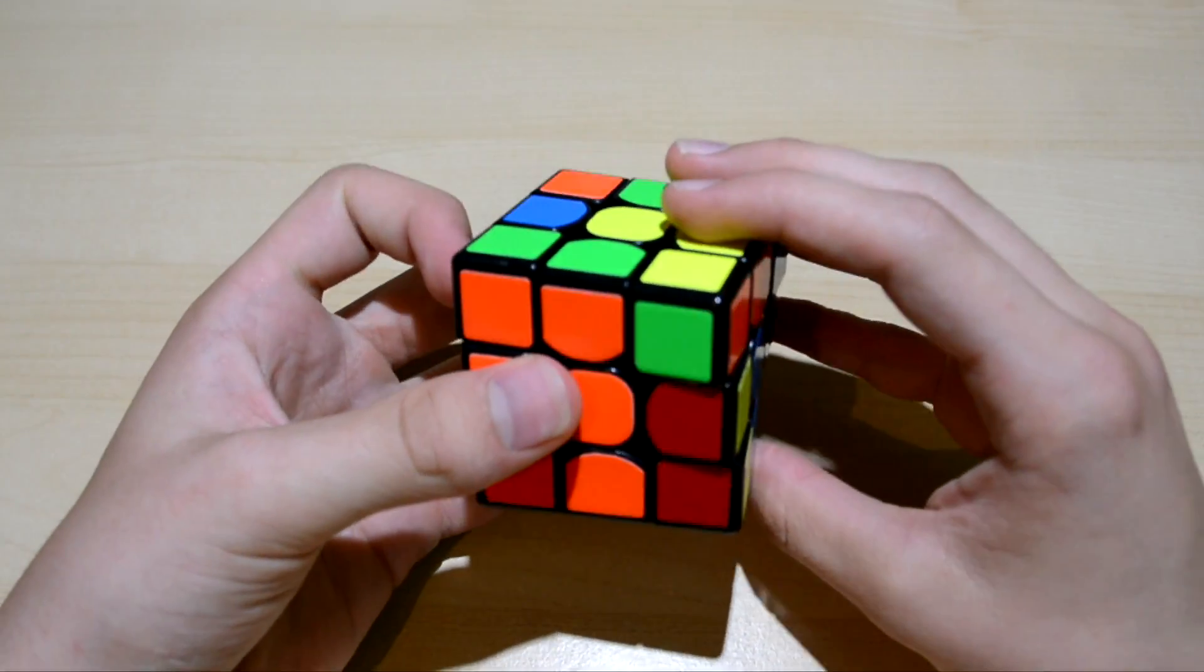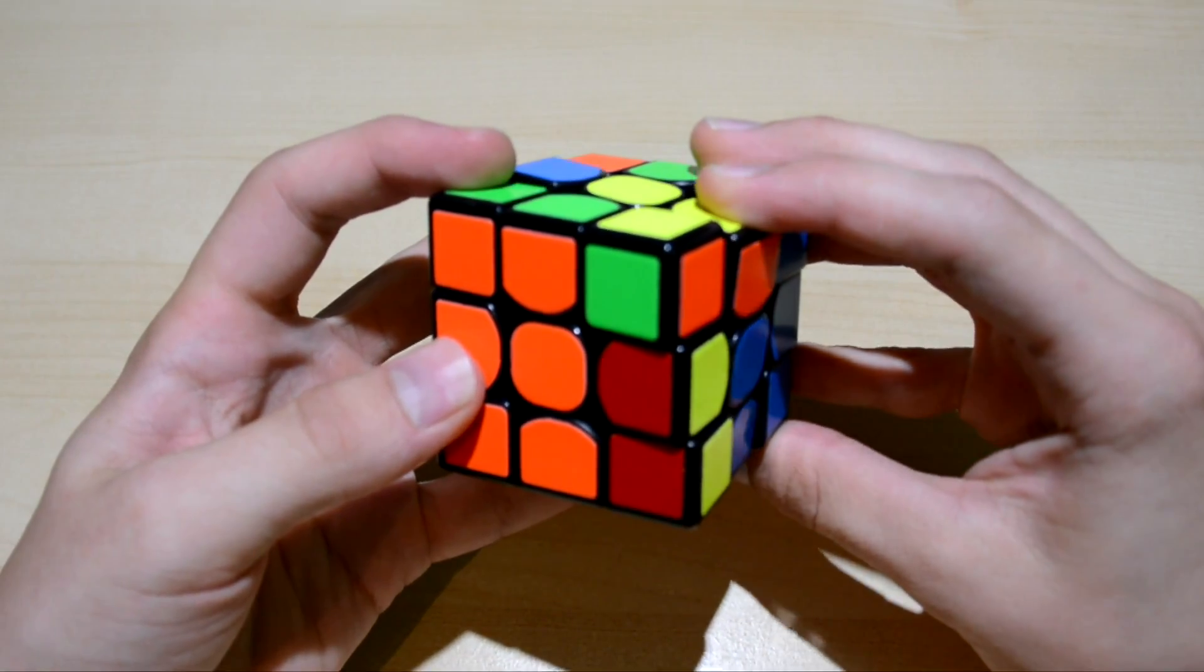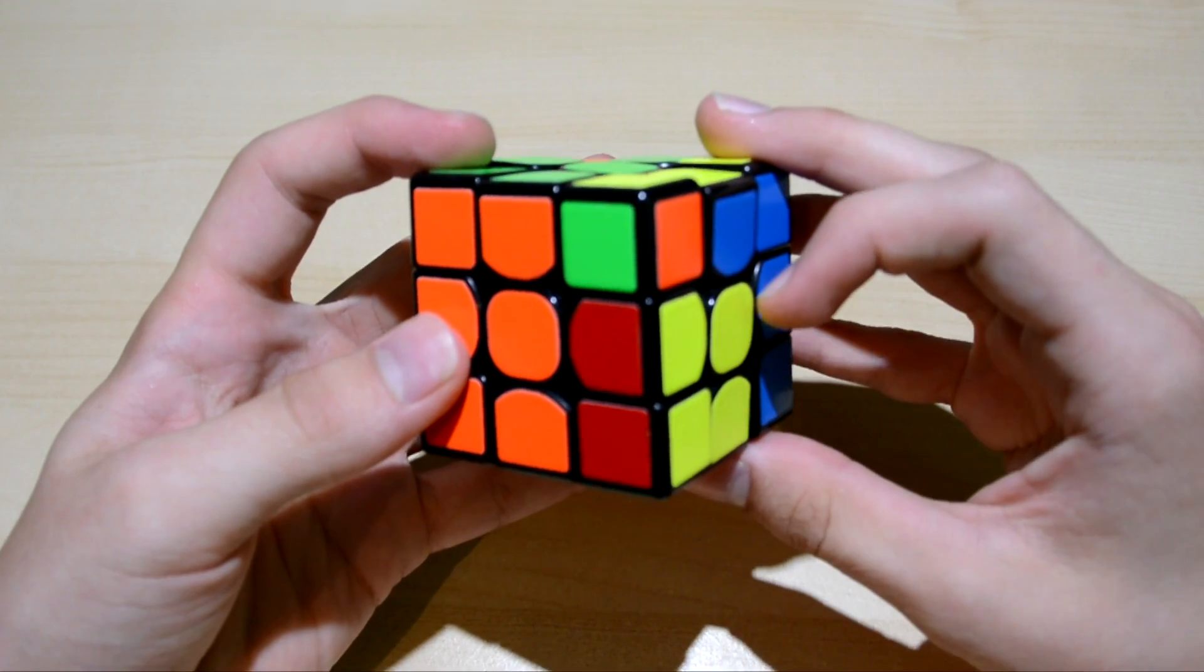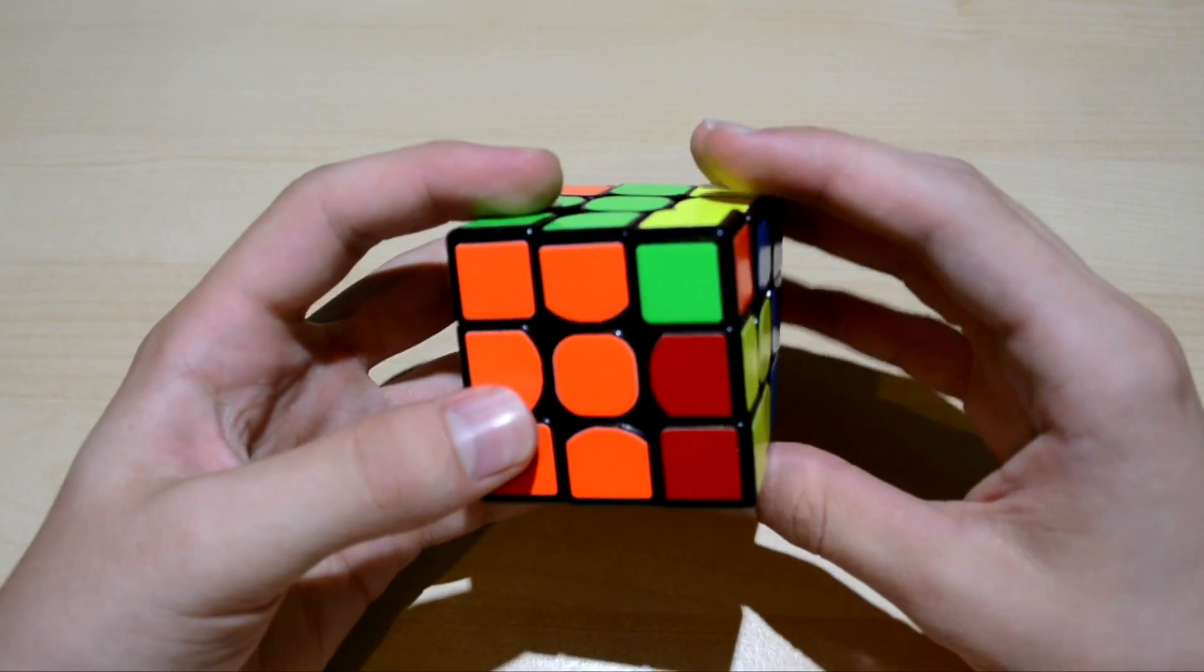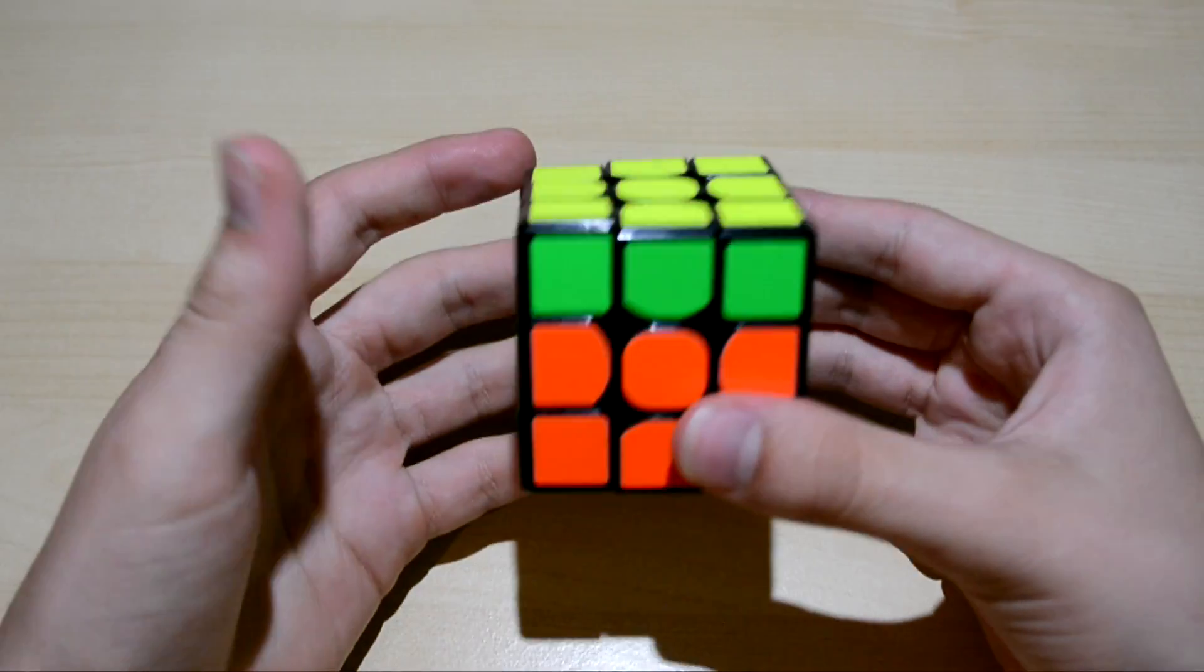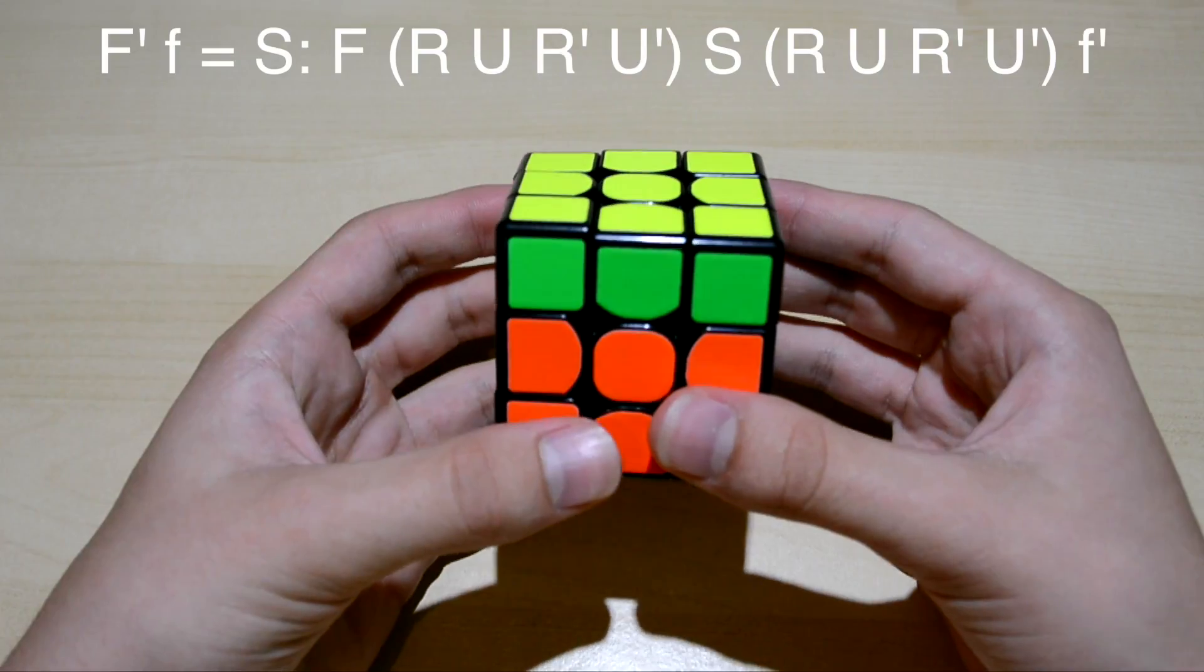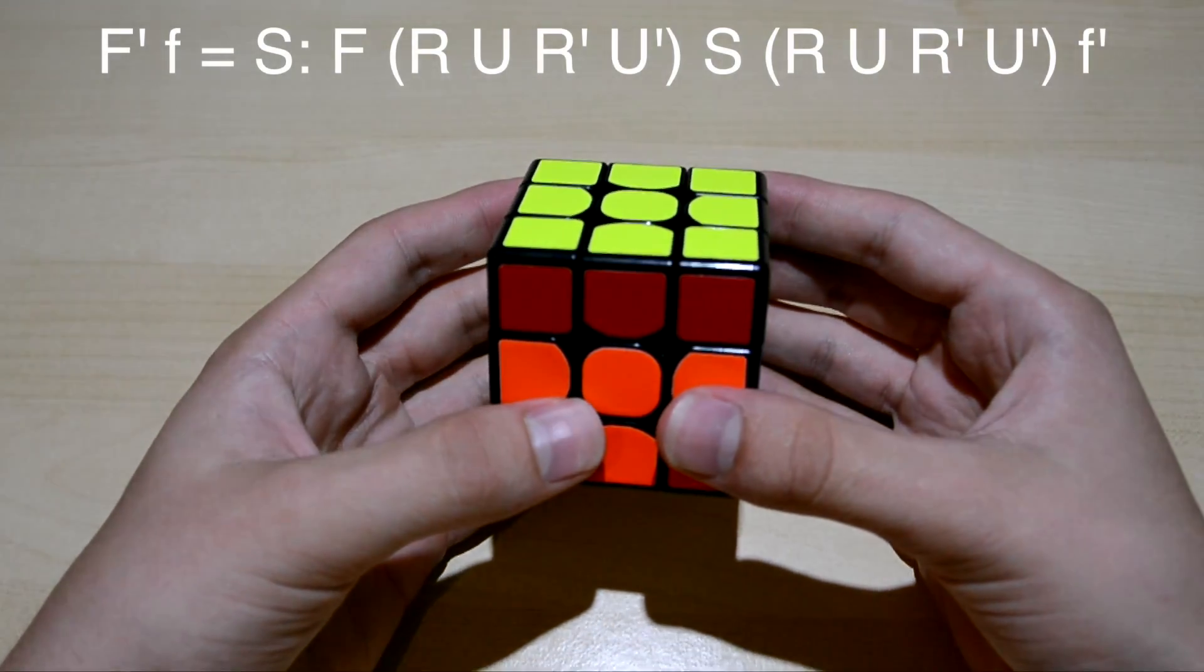You can execute the algorithm easily by starting with an F, then a sexy move. Then you hold the front layer with your index finger and push down the middle layer. This way you basically combine an F prime and a fat F. Then you do another sexy move and a fat F prime and the algorithm is solved. The notation for a F prime and an F is an S.